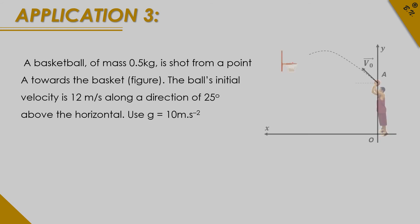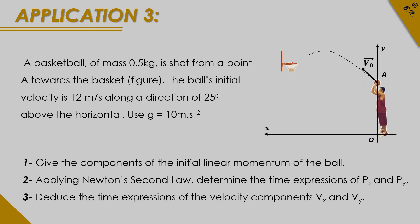A basketball of mass 0.5 kilograms is shot from point A towards the basket. The ball's initial velocity is 12 meters per second along a direction of 25 degrees with the horizontal. Find the components of the initial linear momentum. Applying Newton's second law, determine the time expressions of px and py, then deduce the time expressions of the velocity components vx and vy.